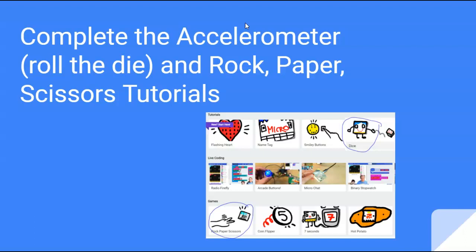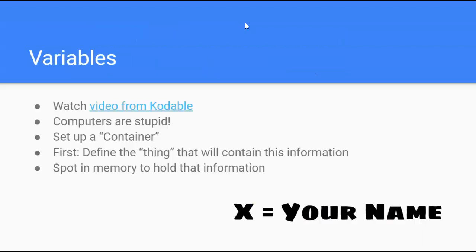You have already completed the accelerometer, which was rolling the die tutorial, and the rock, paper, and scissors tutorial in the micro bit site, and also have watched the codable video about variables.